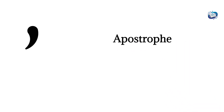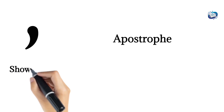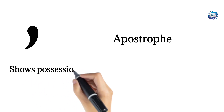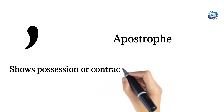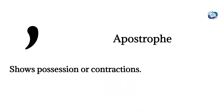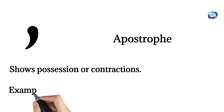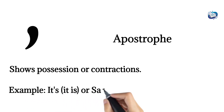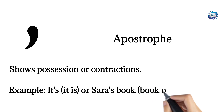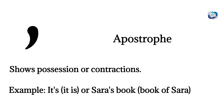Apostrophe. Shows possession or contractions. Example: it's (it is), or Sarah's book (book of Sarah).